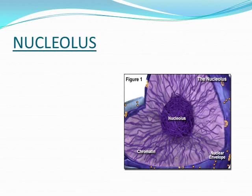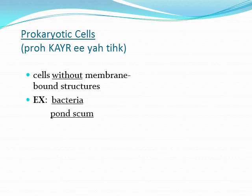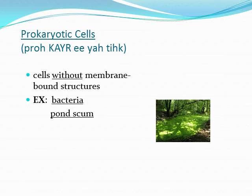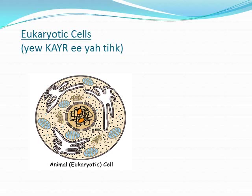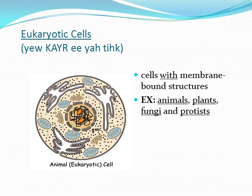The nucleolus is a small cell organelle present within the nucleus. Prokaryotic cells do not have a nuclear membrane; instead, the central area where the nucleic material is present is known as the nucleoid. Eukaryotic cells are marked by the presence of a nuclear membrane around the nucleus and also contain membrane-bound cell organelles.